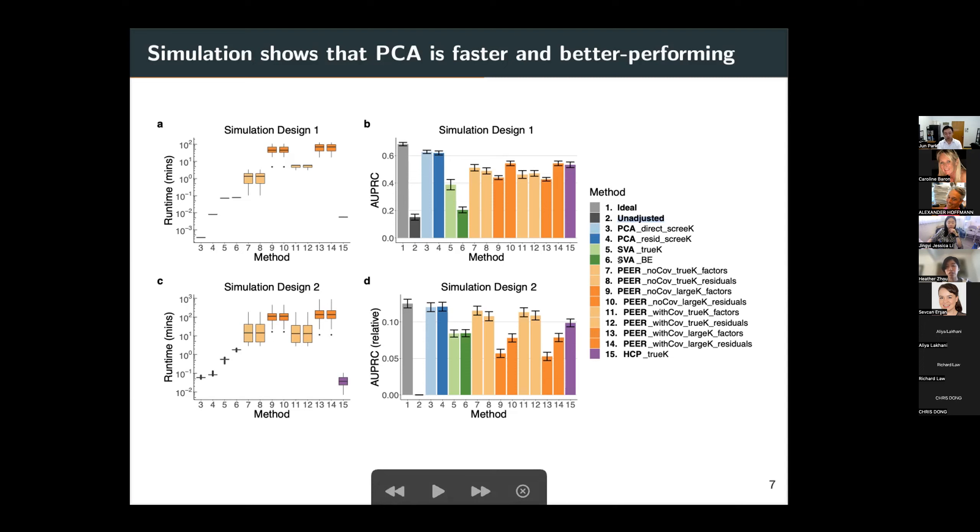Another thing this plot shows is that PEER, the most popular hidden variable inference method, does not have the perceived advantage that its performance does not deteriorate as the number of inferred covariates increases. So the dark orange bars compared to the yellow bars are PEER run with large K versus PEER run with the true K. In the more realistic simulation design, simulation design two, the orange bars are lower than the yellow bars. So that shows that the performance of PEER is hurt by estimating too many PEER factors.